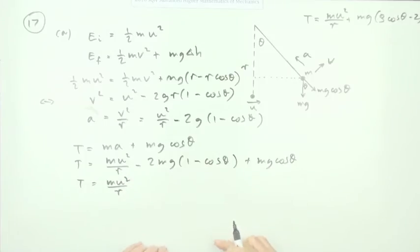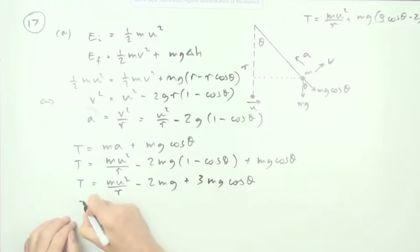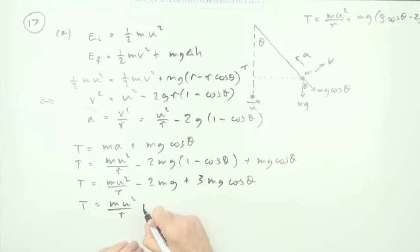So T will be mu squared upon r. Now that's only going to affect this part, but maybe I'll split it up first. That's minus 2mg but plus 2 plus another one which makes plus 3mg cos theta. Now I'll put it back together: mu squared upon r, mg is a common factor, plus mg times 3 cos theta minus 2.